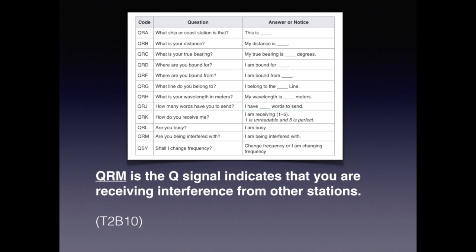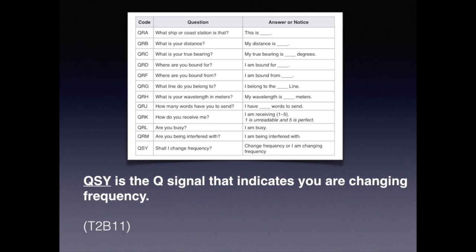While you're not expected to memorize all of the Q signals, you are expected to know a few. QSY means changing frequency. QRM indicates you're receiving interference from other stations. QSY is a Q signal that indicates you're changing frequency.